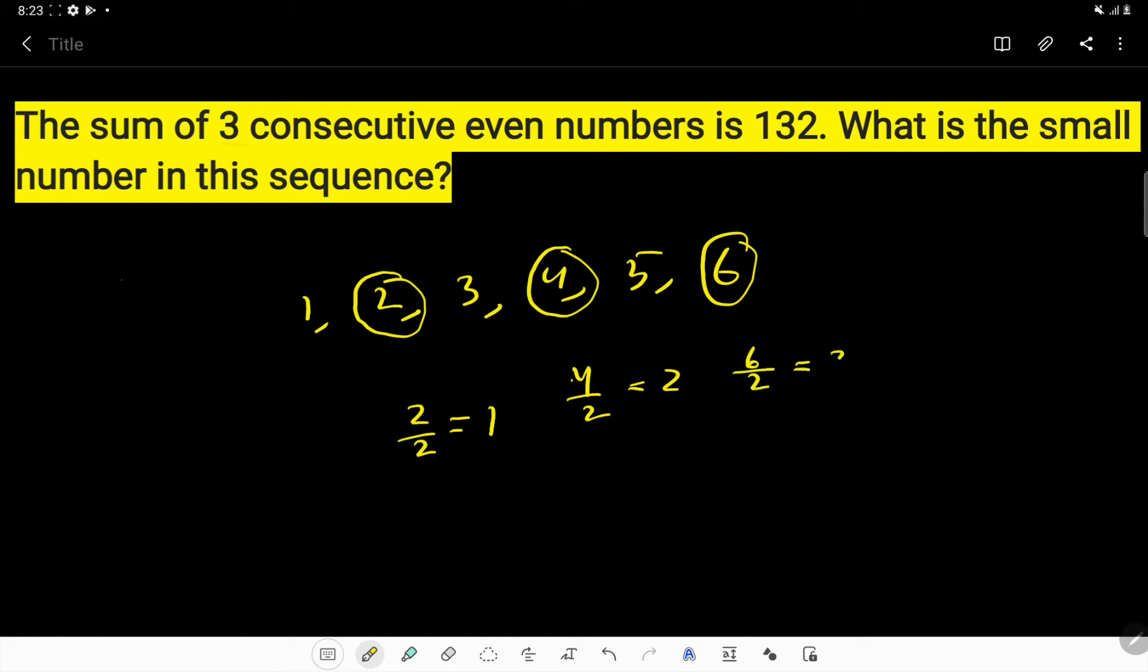But if you divide three by two, you will get remainder one. And if you divide five by two, you will get a remainder. So two, four, six...